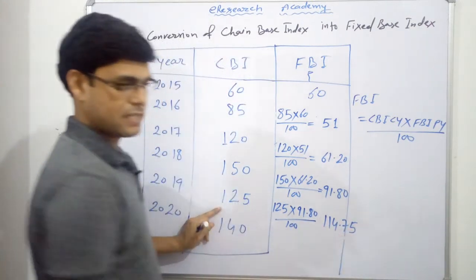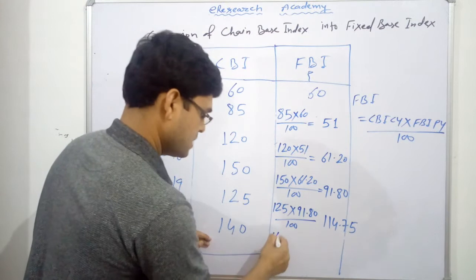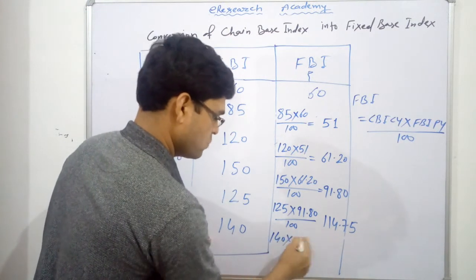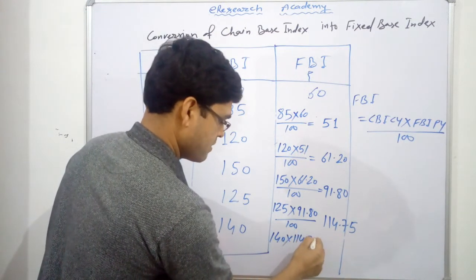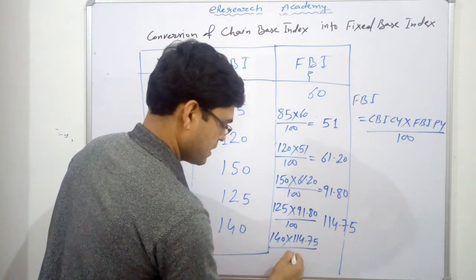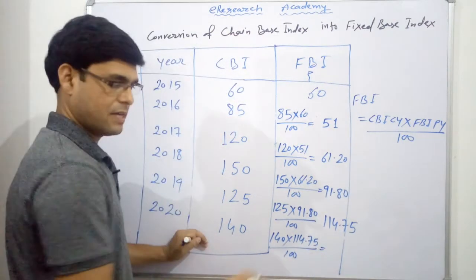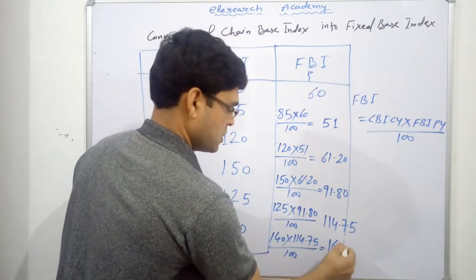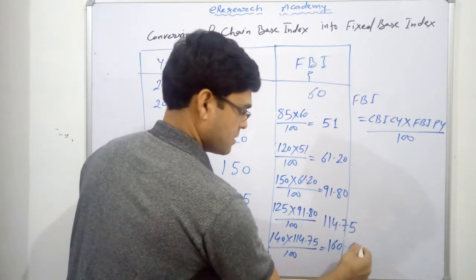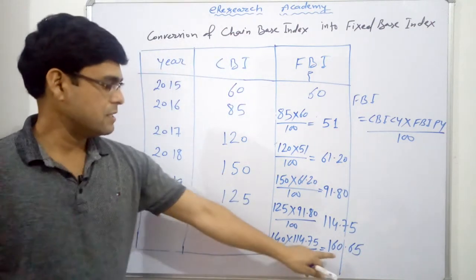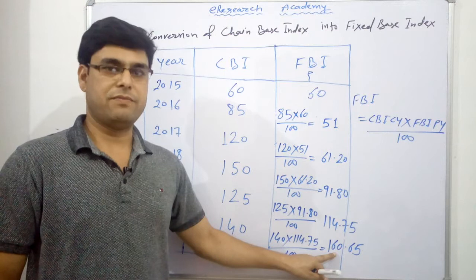And last one is 140 into this 114.75, by 100. And this will give us 160.65.